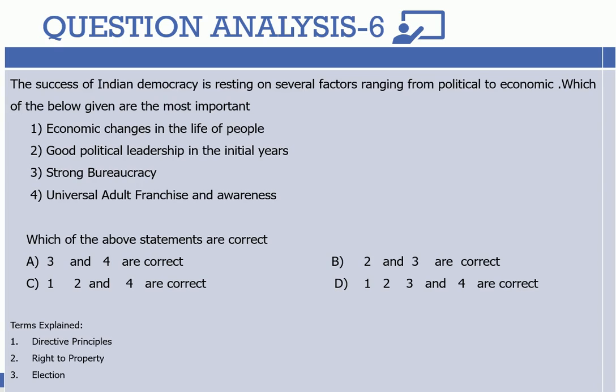Now we come to the right to property. The right to property became a main obstacle to economic justice and economic equality in society. That is why it was removed from fundamental rights from 1978 onwards by the 44th Constitutional Amendment. This is also an important part of the successful democracy of India.